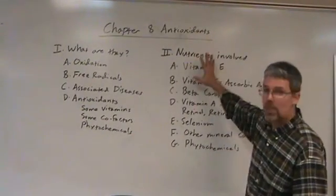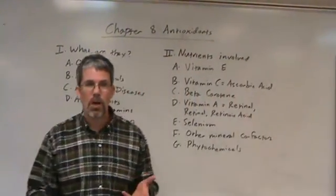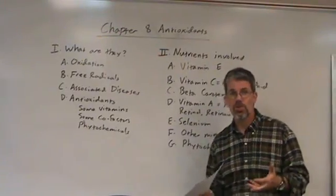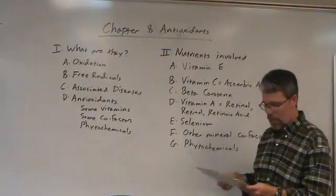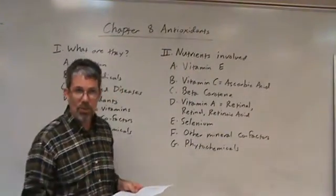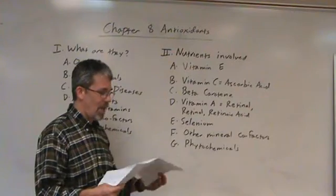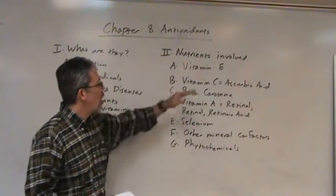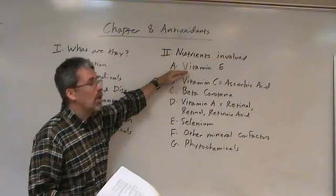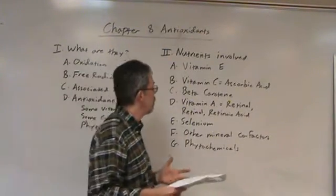Now the nutrients involved — I've given you some details in your notes, and I do expect you to know recommendations and sources and so forth. Vitamin E is a fat-soluble vitamin. It's an antioxidant that protects blood cell membranes. When you don't get enough vitamin E, it causes erythrocyte hemolysis — the red blood cells rupture. It's kind of a rare situation because vitamin E is widespread in foods.